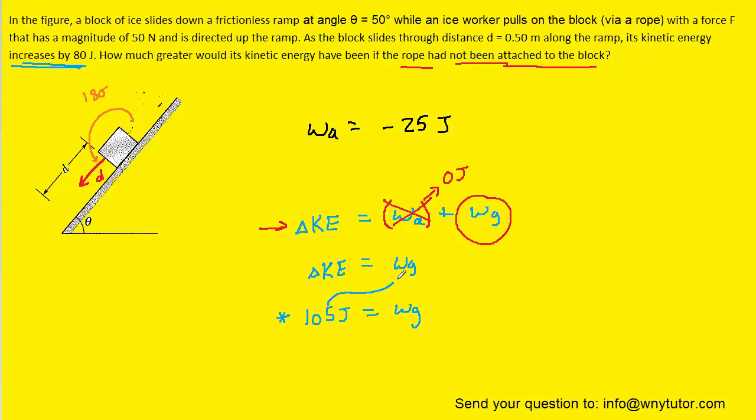Now, again, the work done by gravity is 105 joules. So, that means that the change in kinetic energy is going to be 105 joules. So, this is the change in kinetic energy when there is no rope attached to the block.